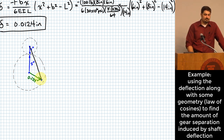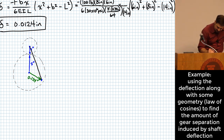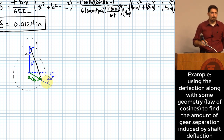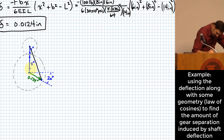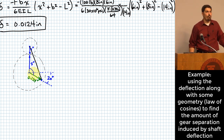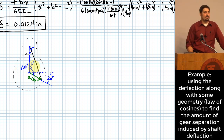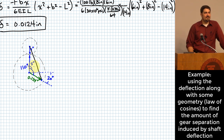How do we do that? Geometry. First, I can draw the original center distance line, and the angle between the pressure angle direction and the center-line direction is 20 degrees. That means the angle between the original center line and the deflection vector is 90° + 20° = 110 degrees.